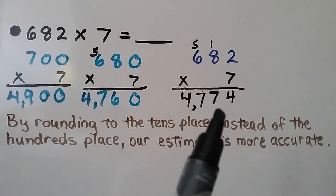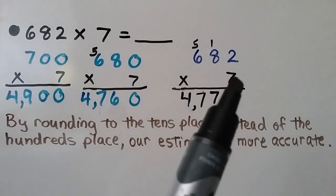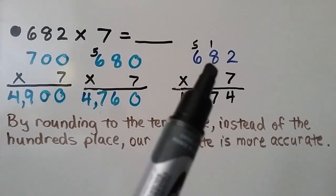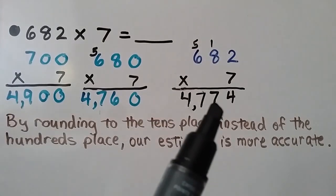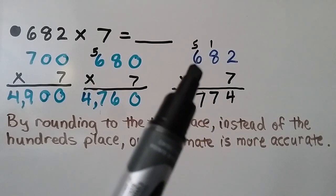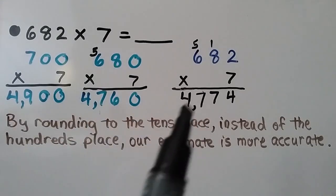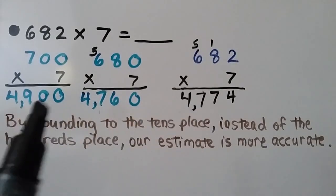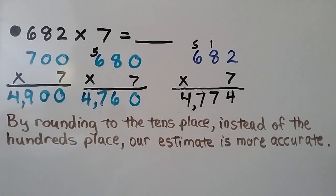When we do the actual product: 7 times 2 is 14 — regroup the 1, put the 4 down. 7 times 8 is 56, plus 1 more is 57 — regroup the 5, put the 7 down. 7 times 6 is 42, plus 5 more is 47. Our actual answer is 4,774. By rounding to the tens place instead of the hundreds place, our estimate is more accurate.